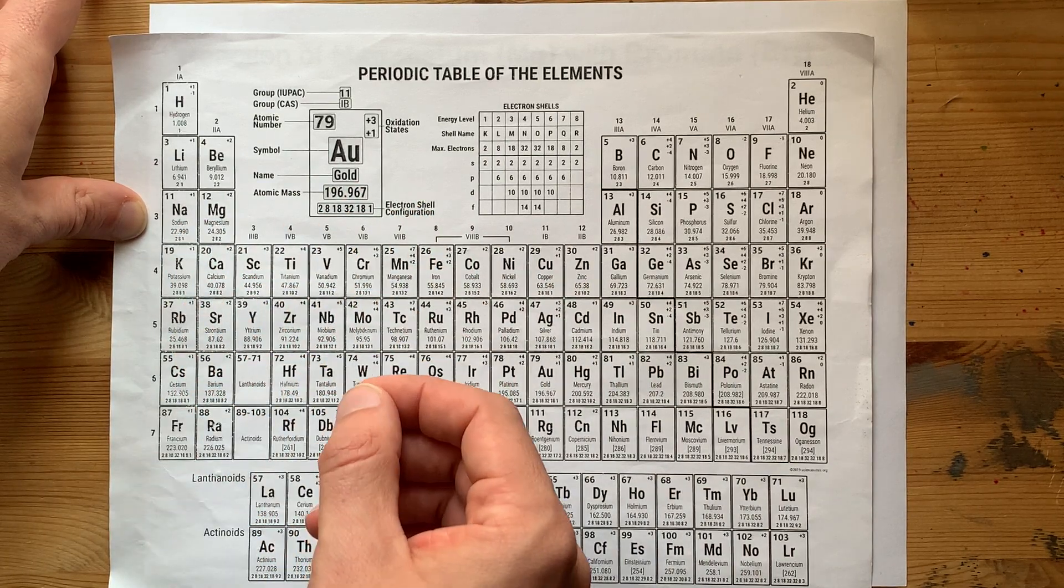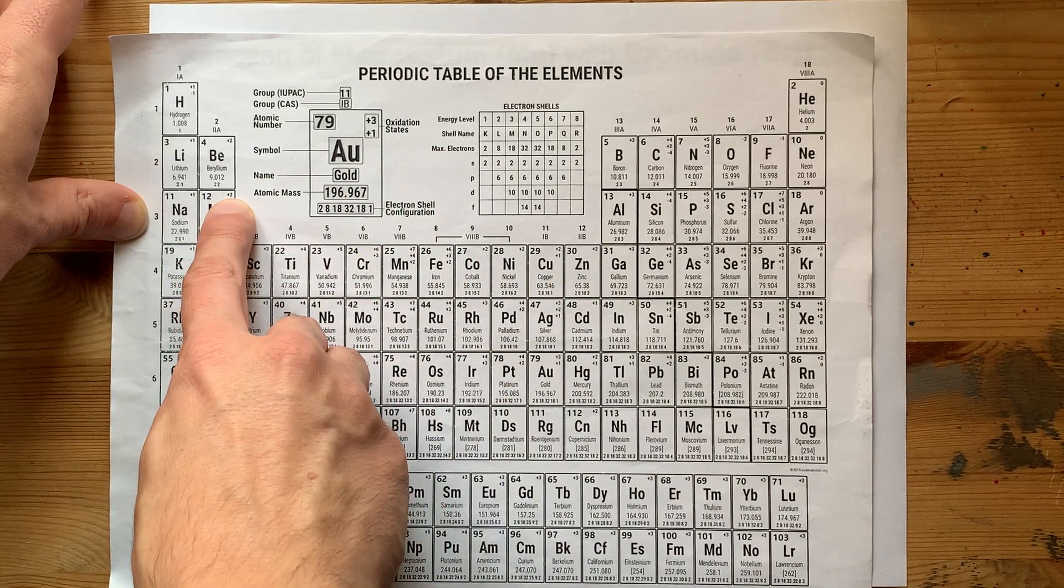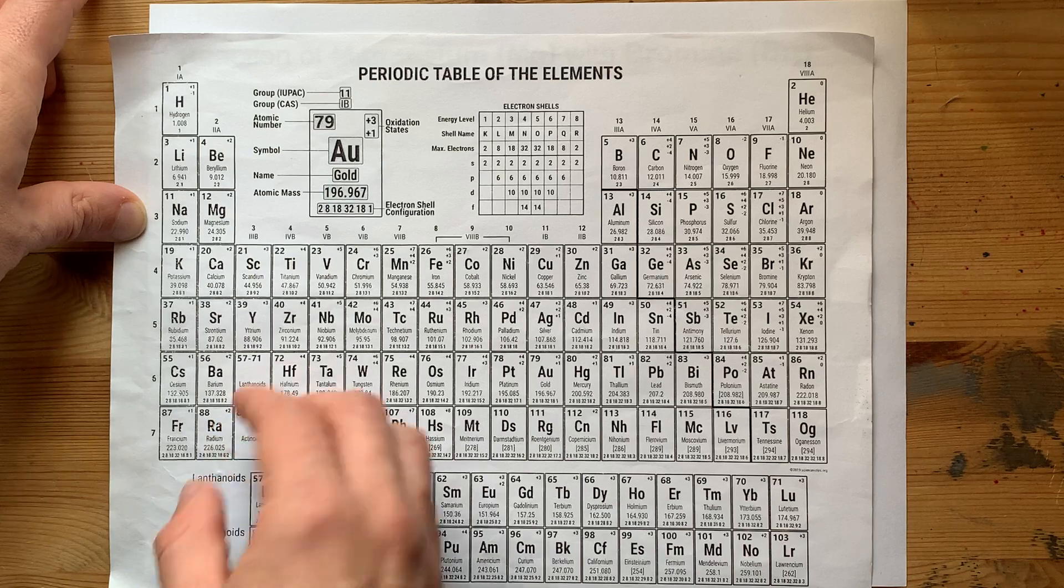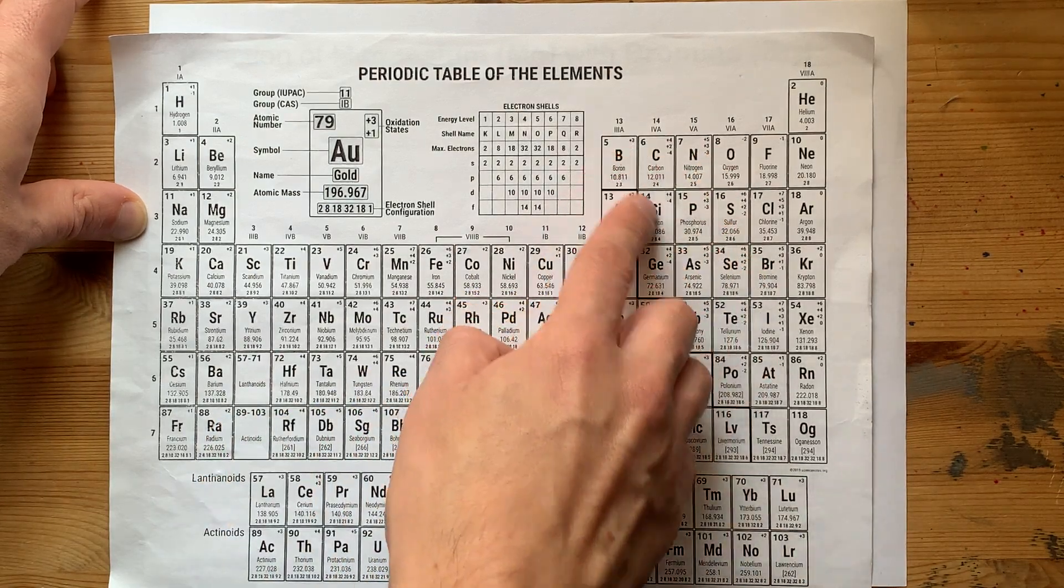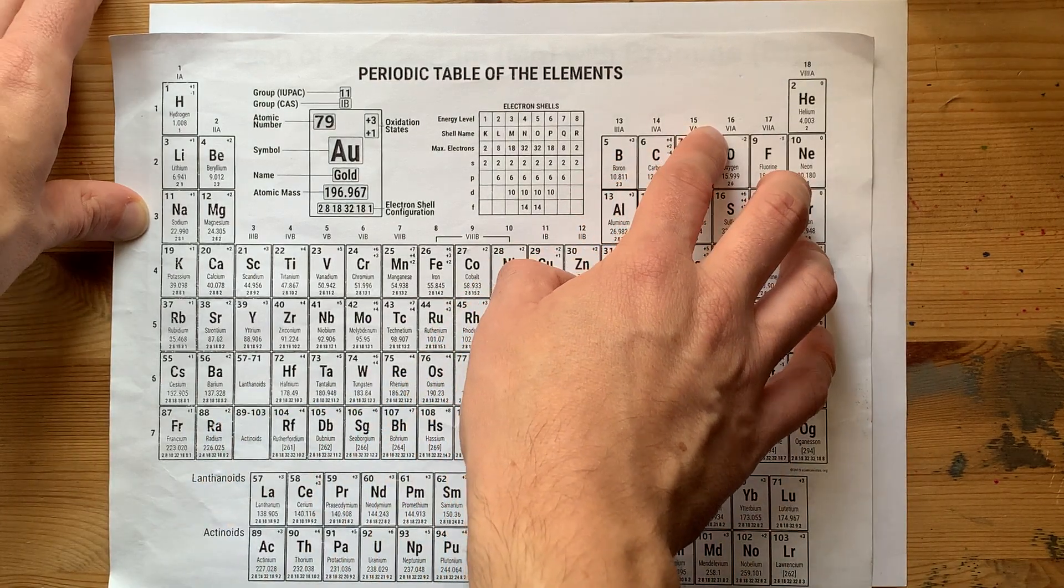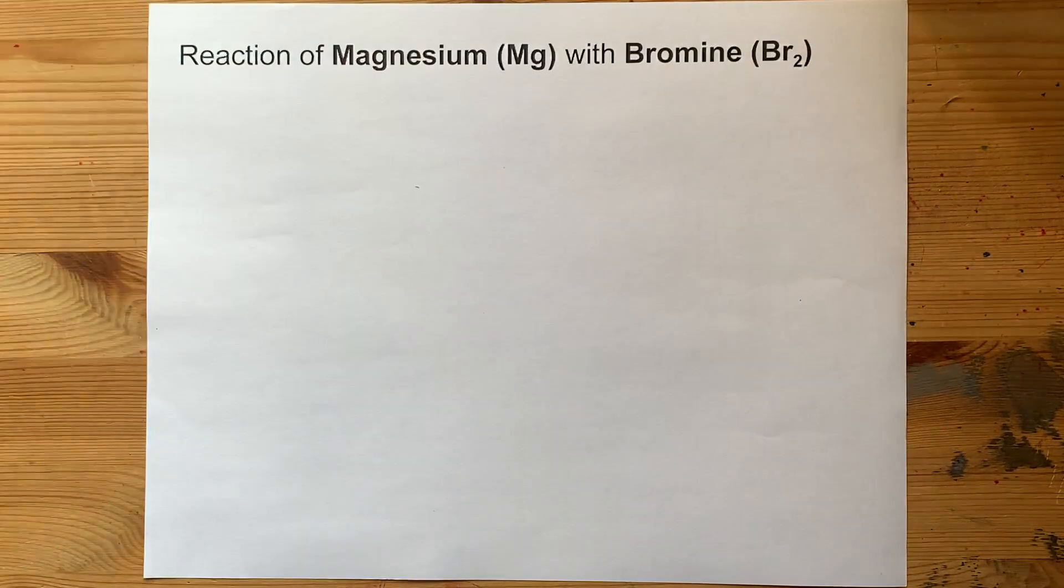Metals want to lose electrons. In fact, it says here magnesium wants a charge of plus two. And bromine is a non-metal from the right-hand side of the staircase. It wants a charge of minus one.